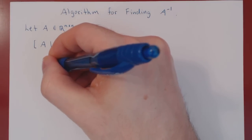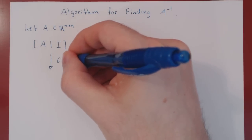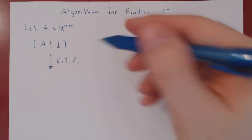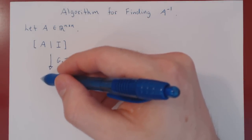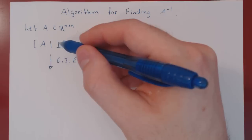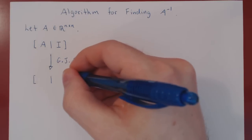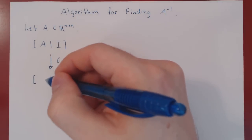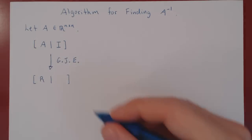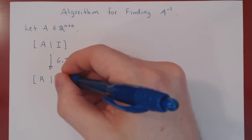Now you simply row reduce — apply the Gauss-Jordan elimination. Every operation applied to A you also apply to I. In the end, A and I will both be transformed: A will become its reduced row echelon form, which we call R, and I will become some other matrix, which we call B.